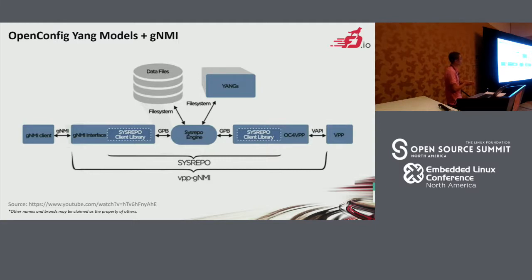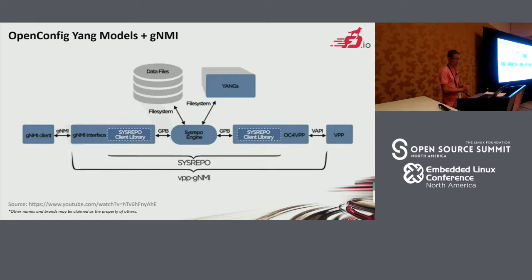For OpenConfig, they have their own northbound interface, which is gNMI. For gNMI, it also has two parts — the client and the server. They communicate with each other through the gNMI protocol. For the gNMI server, it also acts as a sysrepo client and communicates with the sysrepo engine through GPB. For the sysrepo engine and the data plane, they communicate through the plugin — here is the OpenConfig-for-VPP.